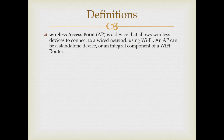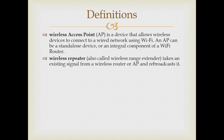The access point is a device that allows wireless stations to connect to a wired network using Wi-Fi. A wireless repeater takes an existing signal from an access point and rebroadcasts it. Wireless repeaters typically reduce throughput by up to 50%.